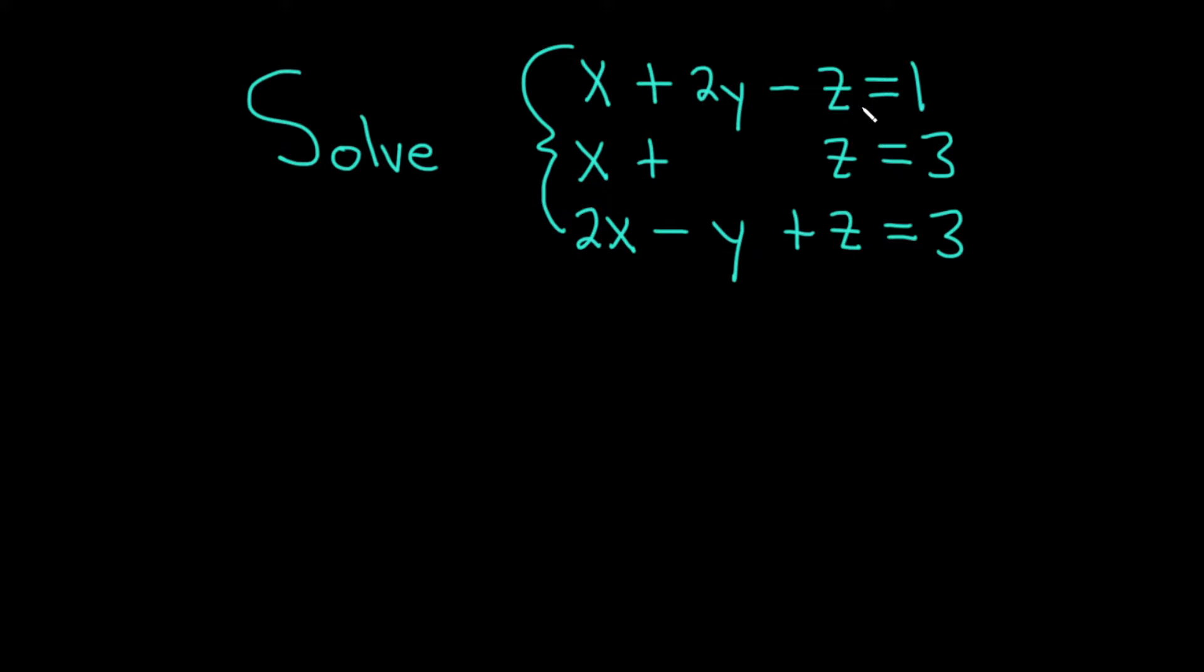x plus 2y minus z equals 1, x plus z equals 3, and 2x minus y plus z equals 3. Let's go ahead and carefully work through this solution.